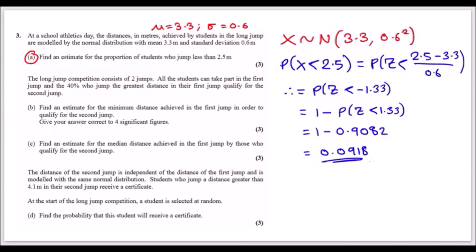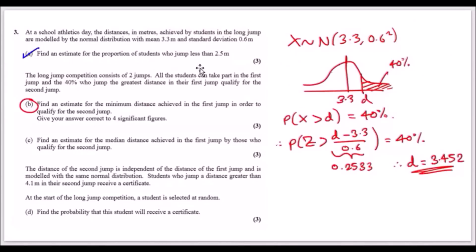Part (b): the competition has two jumps. All students take the first jump, and the top 40% qualify for the second jump. Drawing a bell curve with mean 3.3, the value d (minimum qualifying distance) sits on the right-hand side. Since the middle covers 50%, the top 40% is to the right, so d > 3.3.